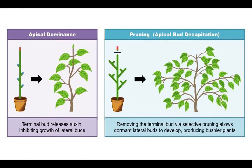The SAM includes apical dominance — it is the priority portion of the plant, dictating the development of new leaves, branches, or flowers. The SAM requires nourishment from the plant body. Removing or decapitating the SAM will induce dormant lateral buds to actively divide, making the plant more robust. This process of SAM decapitation is commonly used in horticulture to make robust and stunted-growing bonsai.